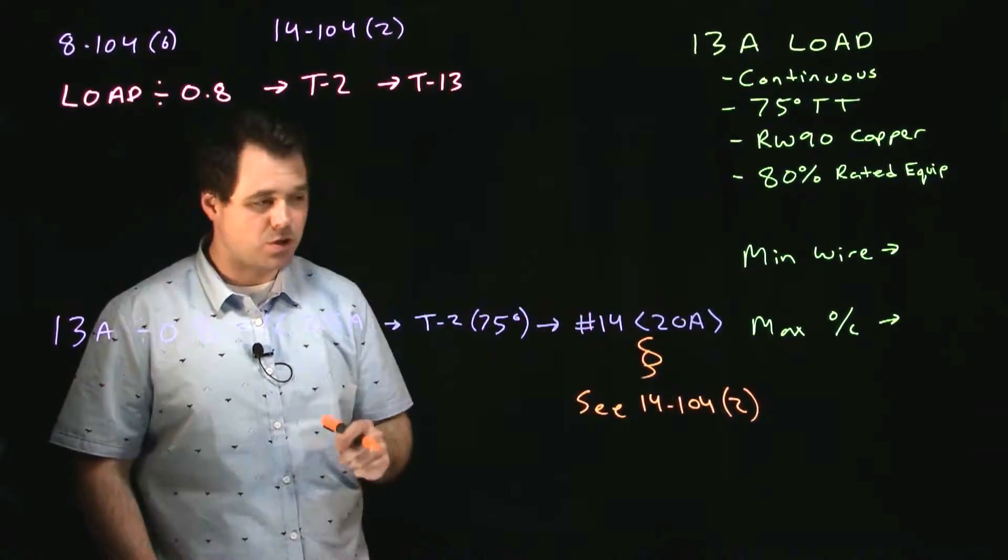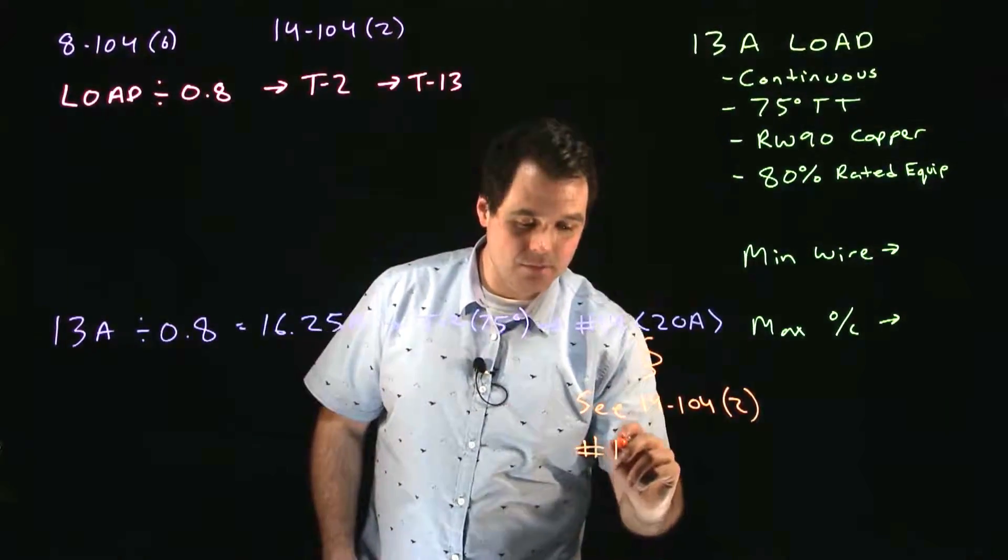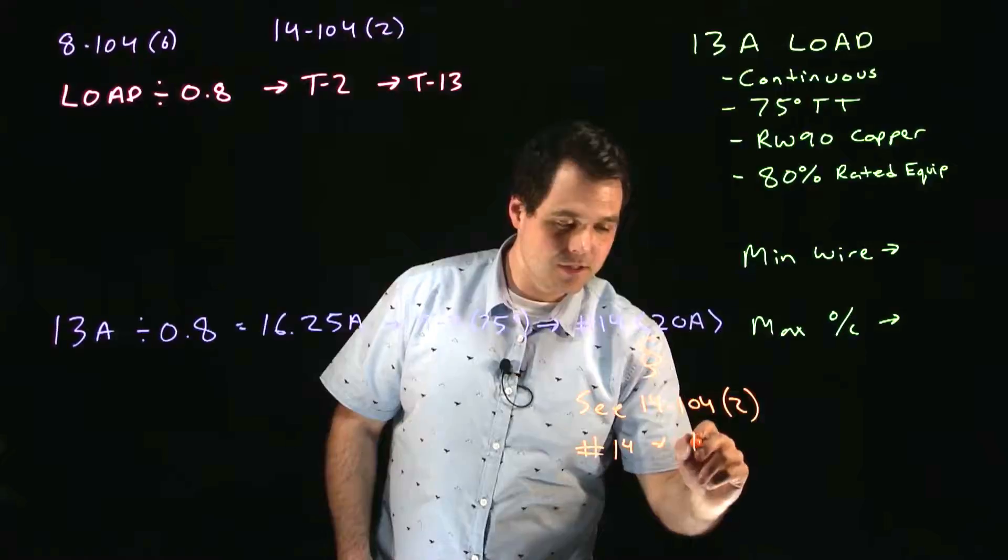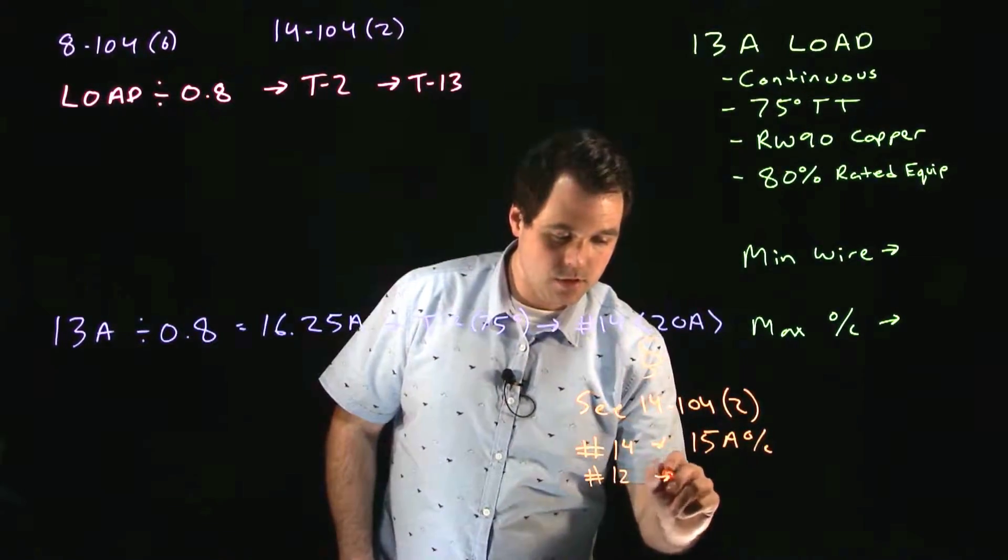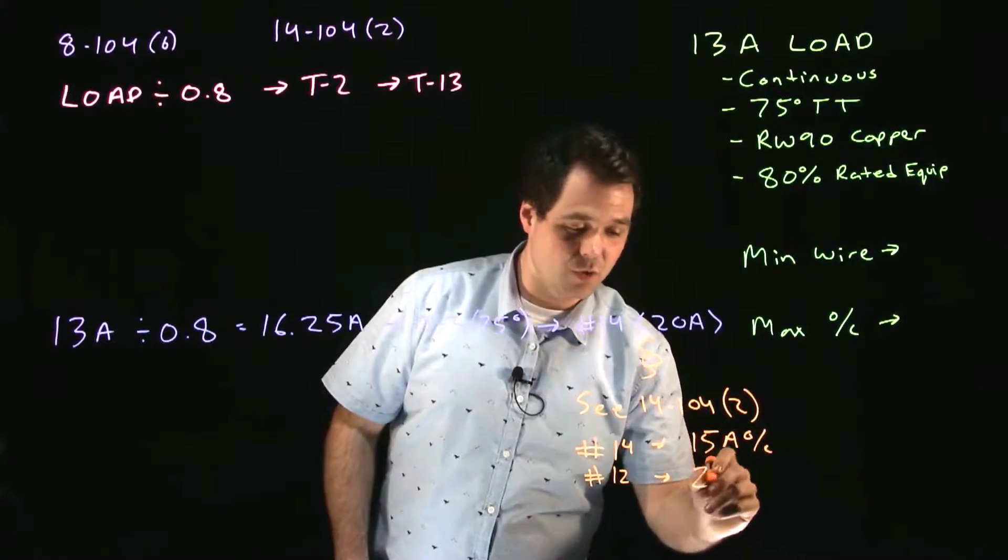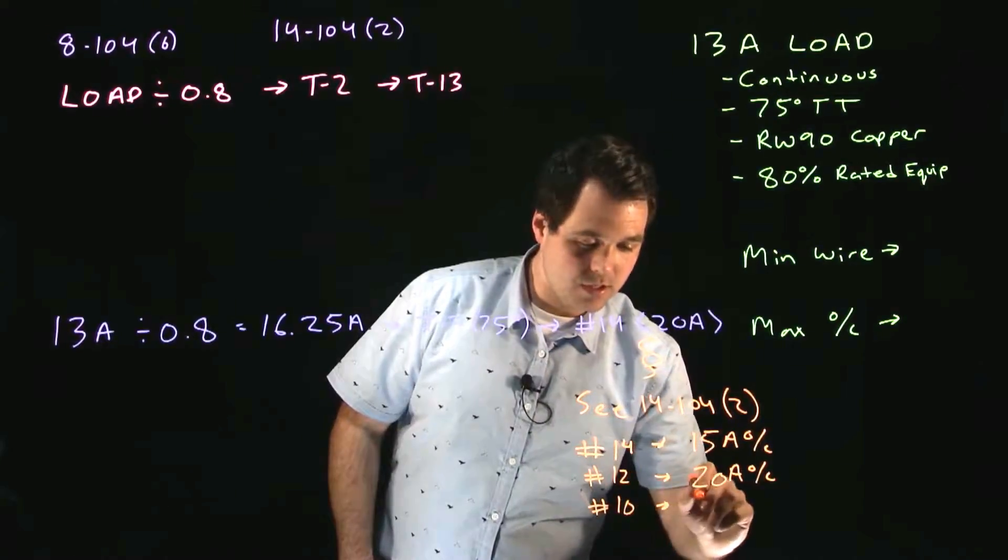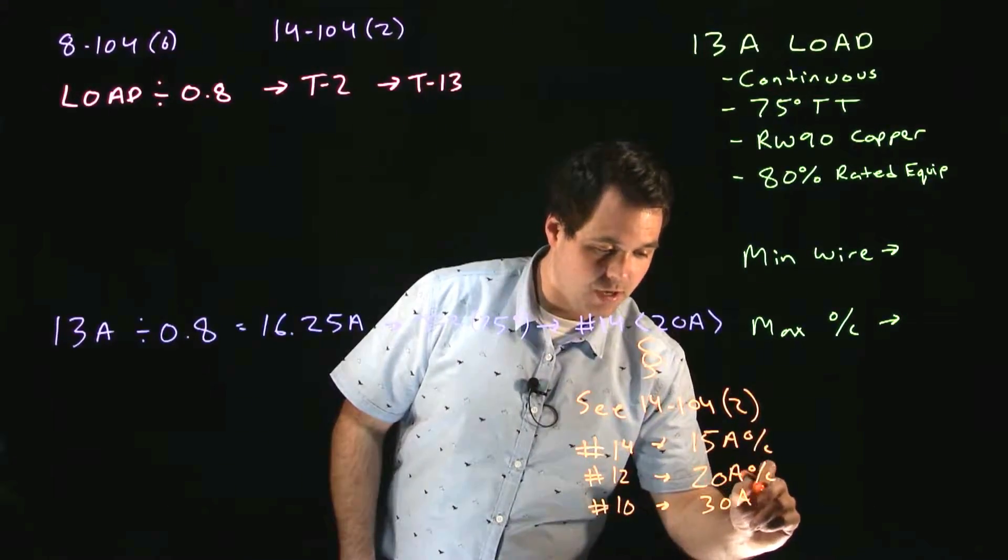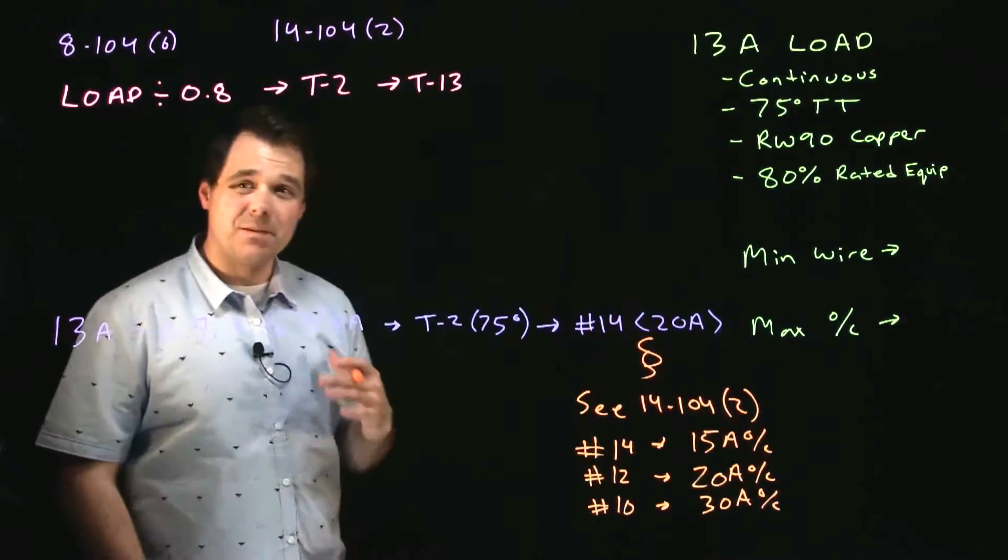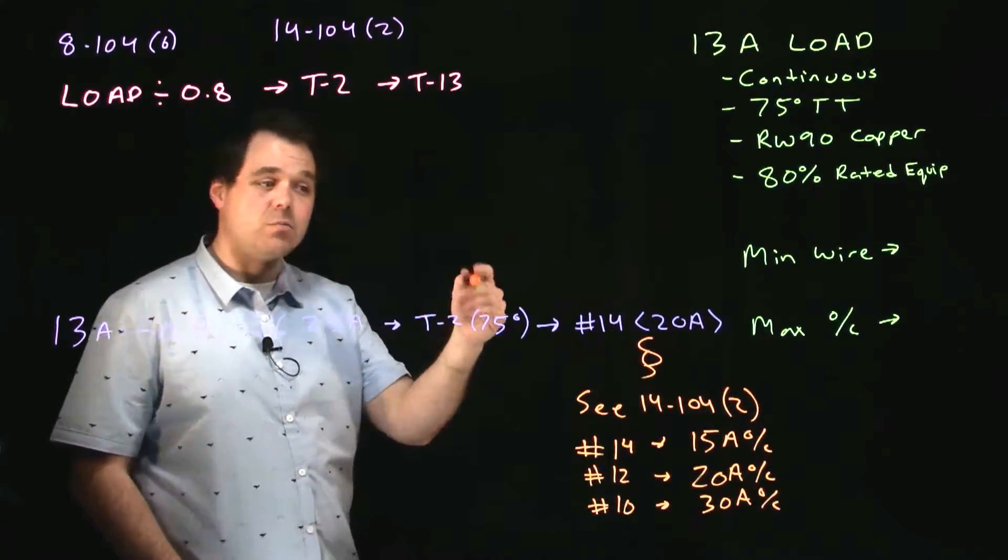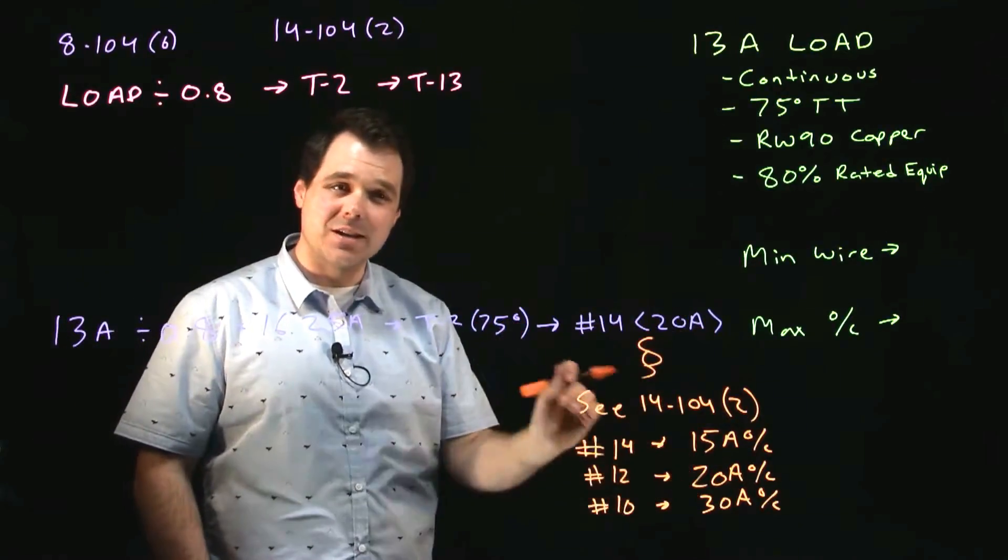So we make our way to 14-104 sub rule 2 says if you have a number 14 wire the maximum OC that you can have on that wire is a 15 amp OC. It says if you have a number 12 the biggest OC you can have is a 20 amp OC and if you have a number 10 the biggest OC you can have would be a 30 amp overcurrent. Those are the maximum allowable overcurrents as permitted by code. So we have to keep those in mind whenever we're on table two: 14, 12, and 10.